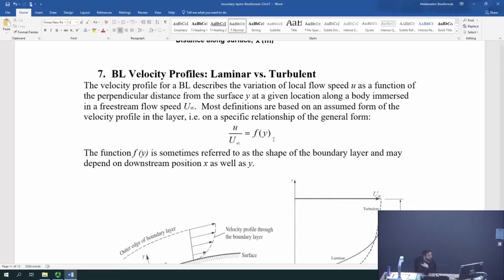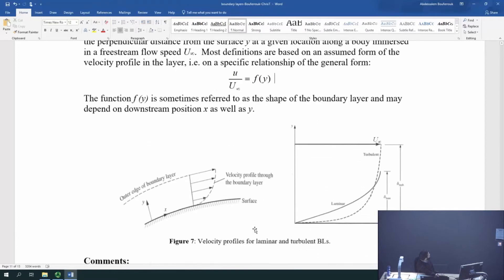Now, for those who did the example sheet last time, you guys will have noticed that we gave you two examples. One is u over u infinity sine something, and the other one, u over u infinity, y over delta, something like that. So, it's a function of y. And generally, these forms describe a boundary layer.